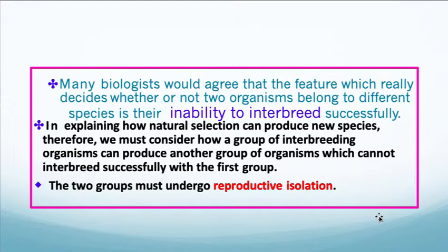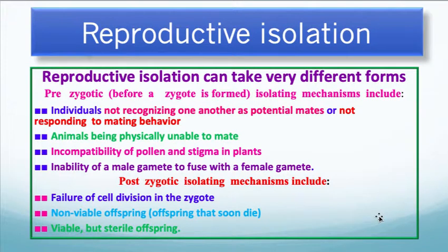To understand how natural selection can produce a new species, we have to consider how a group of interbreeding organisms can produce another group which cannot — the two groups must undergo reproductive isolation. Reproductive isolation can take different forms. Prezygotic isolating mechanisms, before the zygote is formed, include individuals not recognizing one another as potential mates, not responding to each other's mating behaviors, animals being physically unable to mate, incompatibility of pollen and stigma, and the inability of male and female gametes to fuse. Postzygotic isolating mechanisms include failure of cell division in the zygote, non-viable offspring that die young, or viable but sterile offspring.